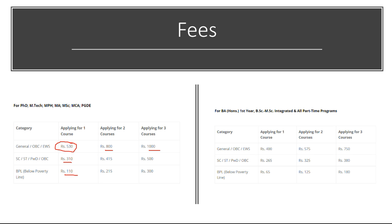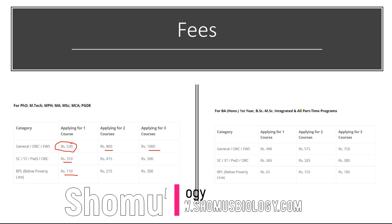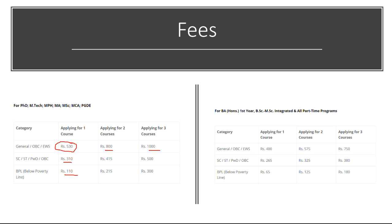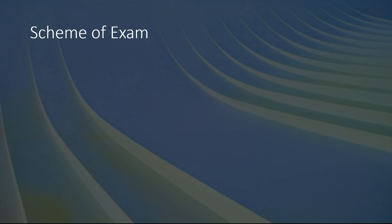For BA Honours, first-year BSc, MSc integrated programs, and all part-time programs, one course application is 400 rupees for General; two courses is 575 rupees; and three courses is 750 rupees. SC/ST, OBC, and the rest of the details are provided on screen. You can take a screenshot of this page to get to know about the full details.